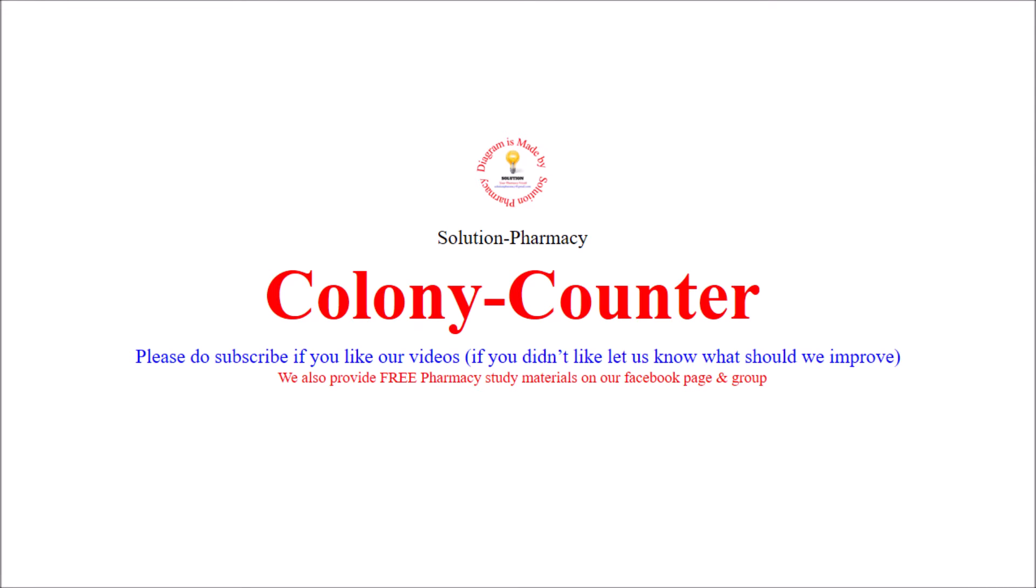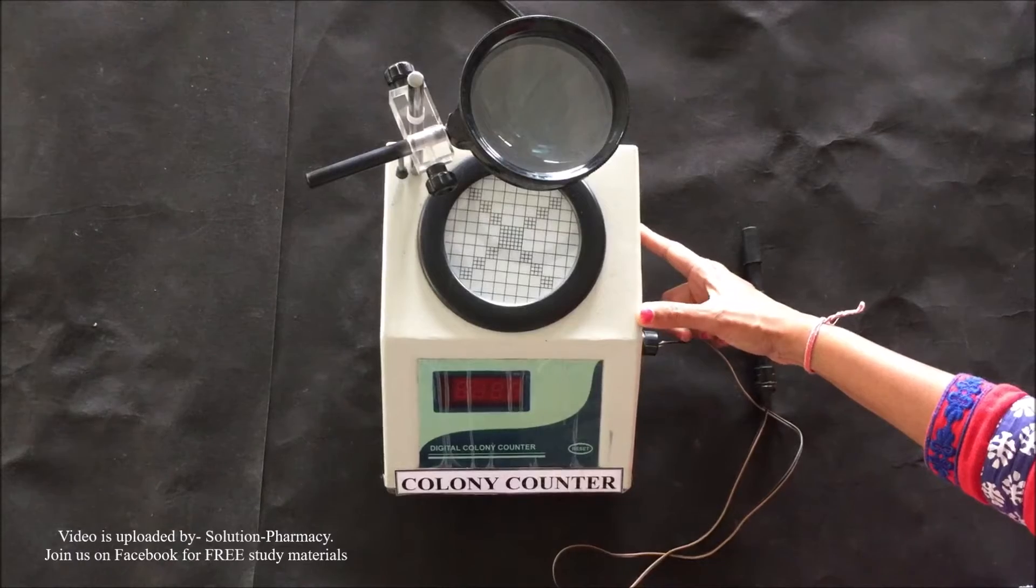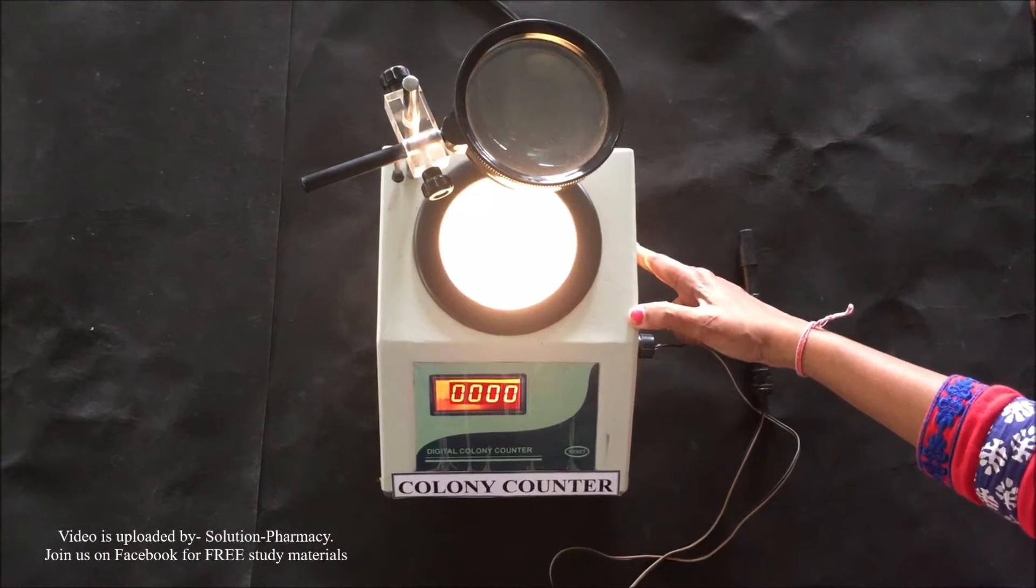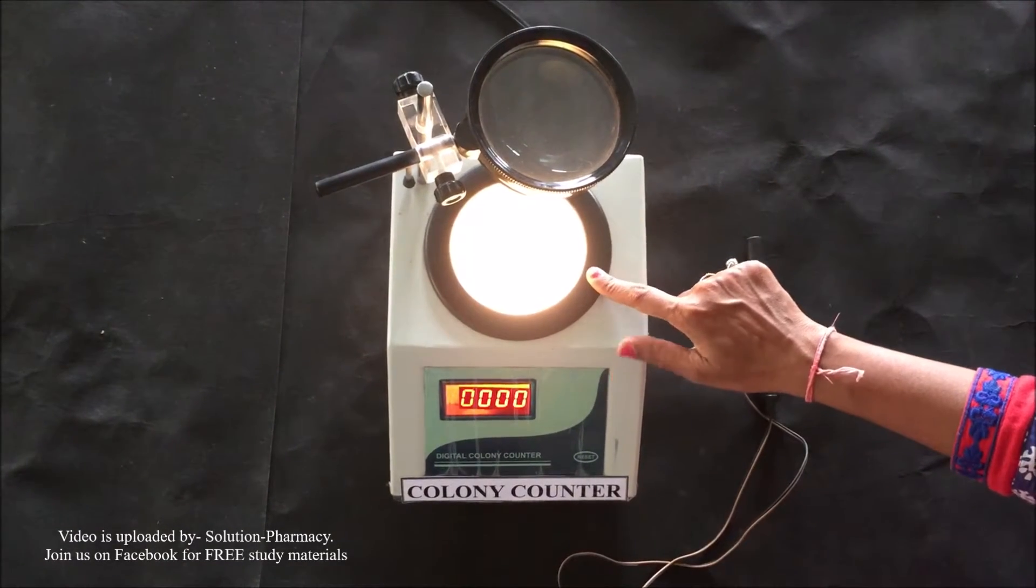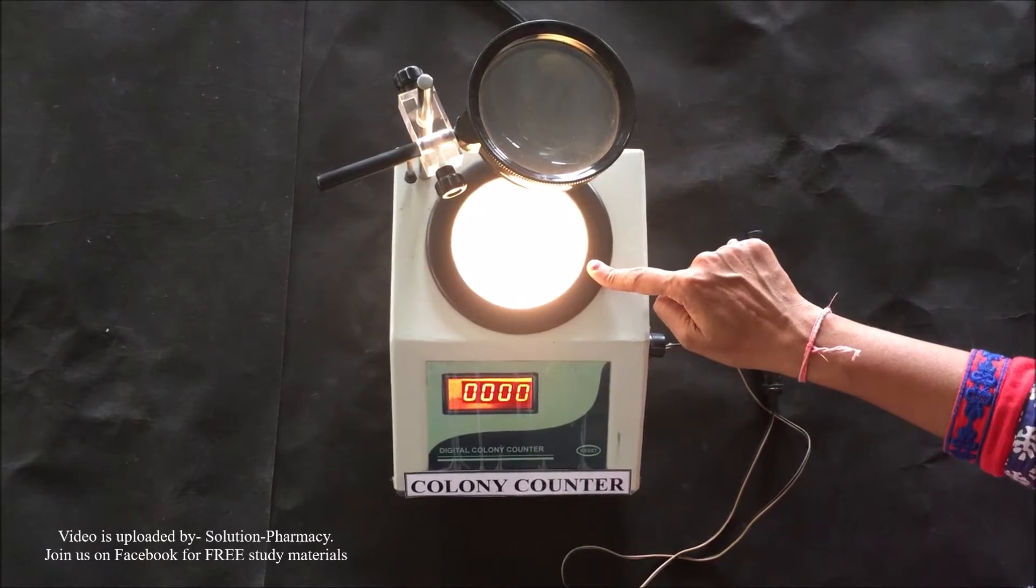Hello friends, welcome to the channel Solution Pharmacy. Today we will show you how to operate a colony counter, which is used to count microbial colonies on a petri dish. This is the colony counter. Switch on the instrument. As we switch on the instrument, light illuminates. This is the illuminating surface where we have to keep the petri dish for counting the colonies.